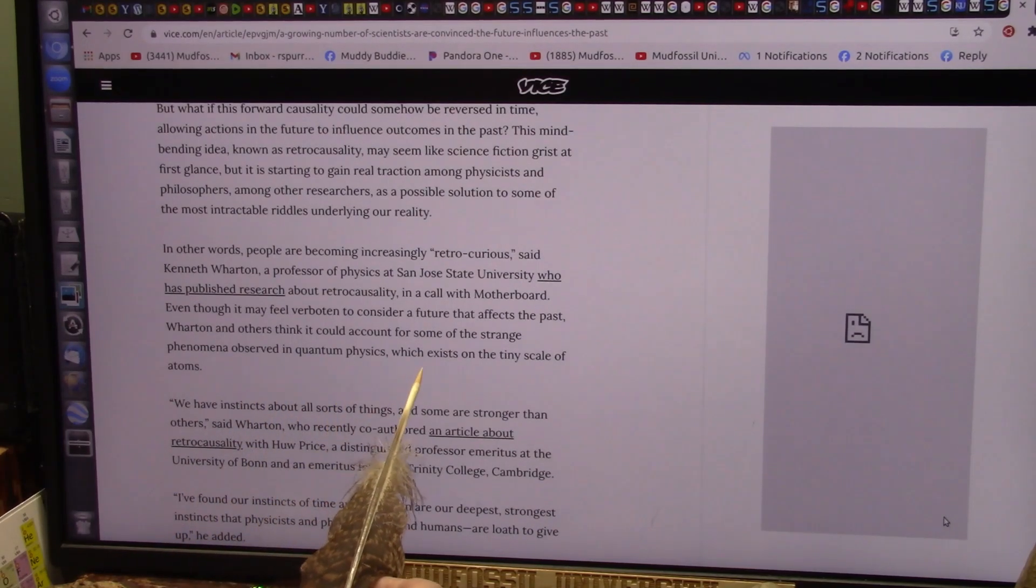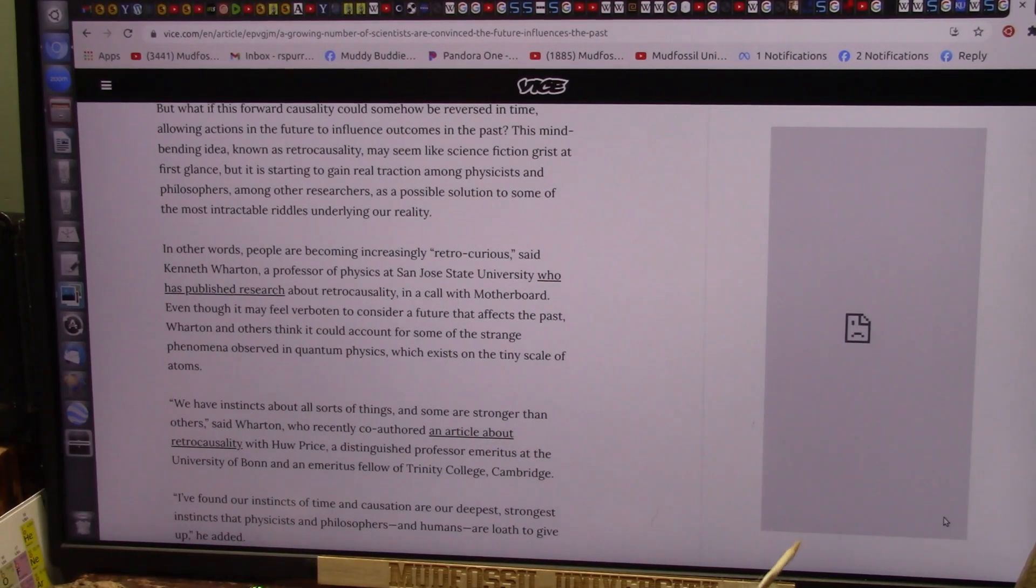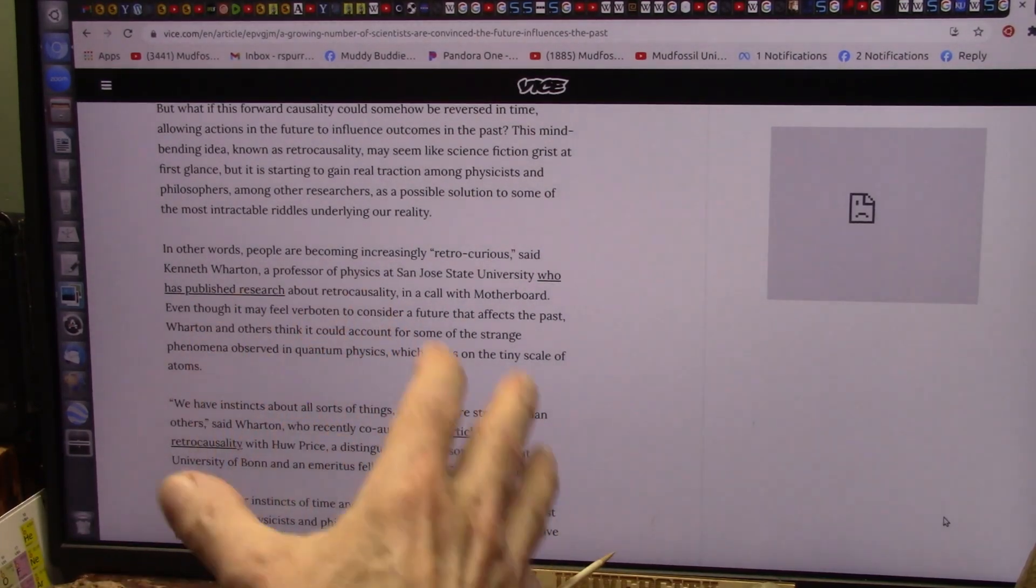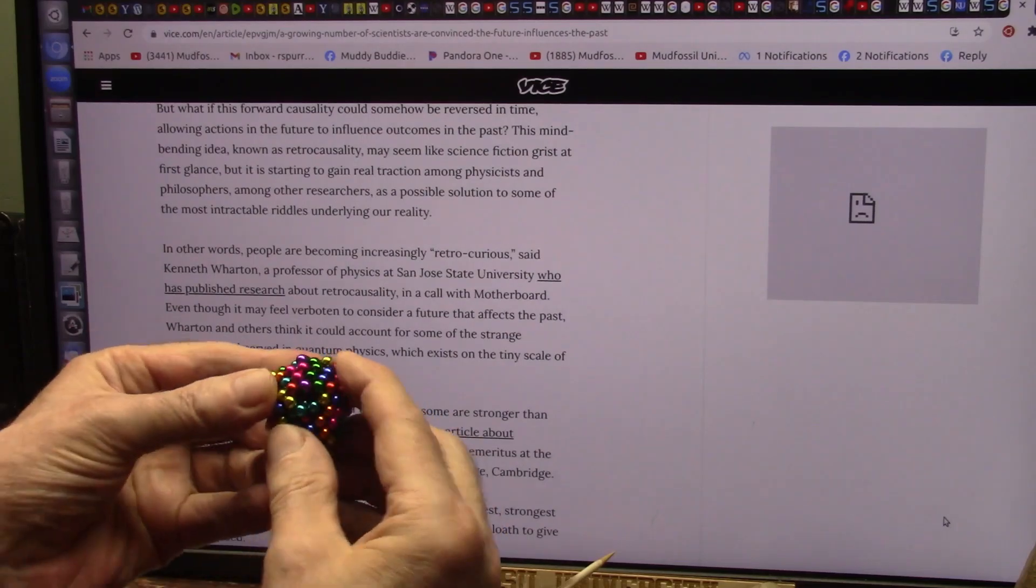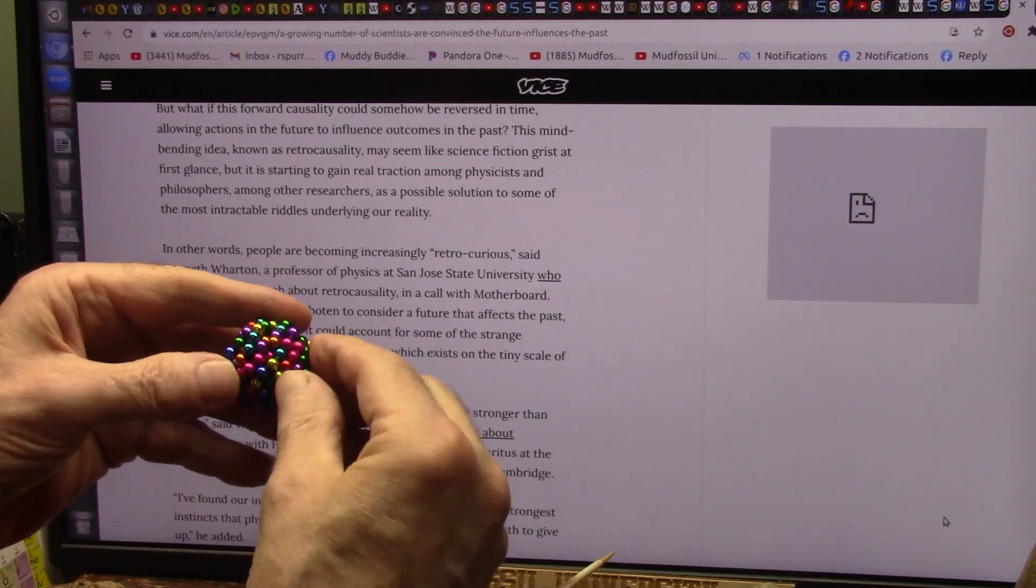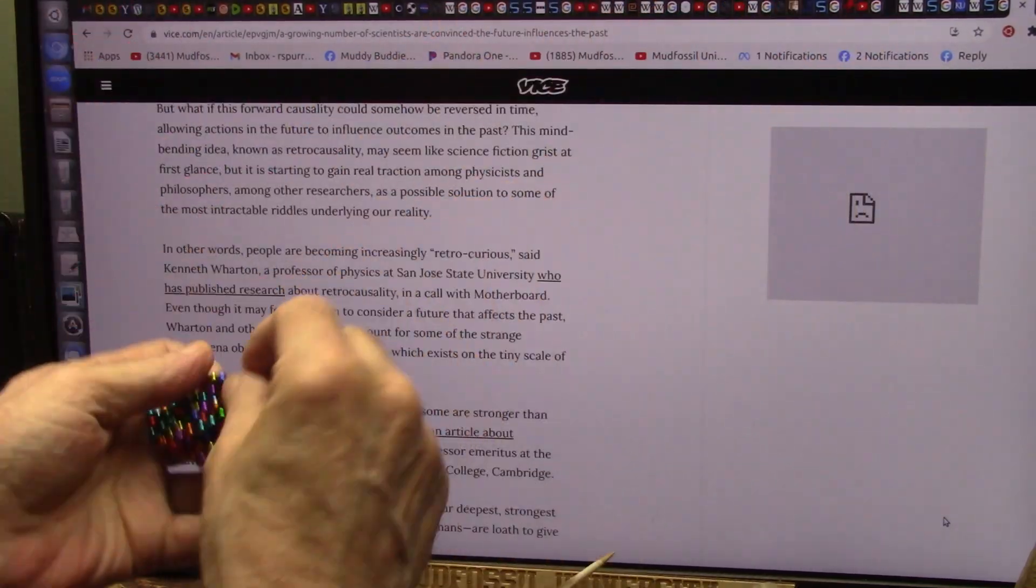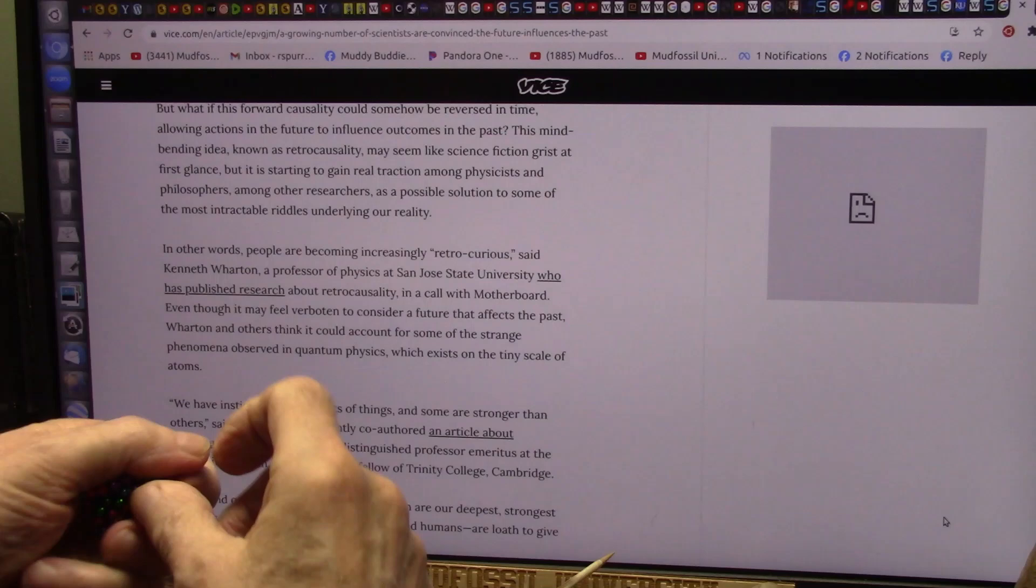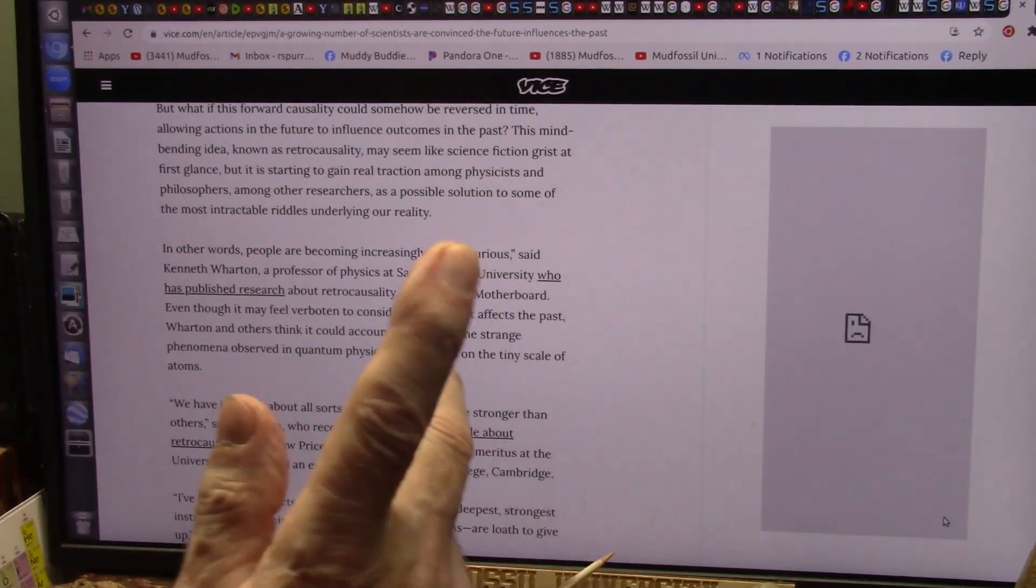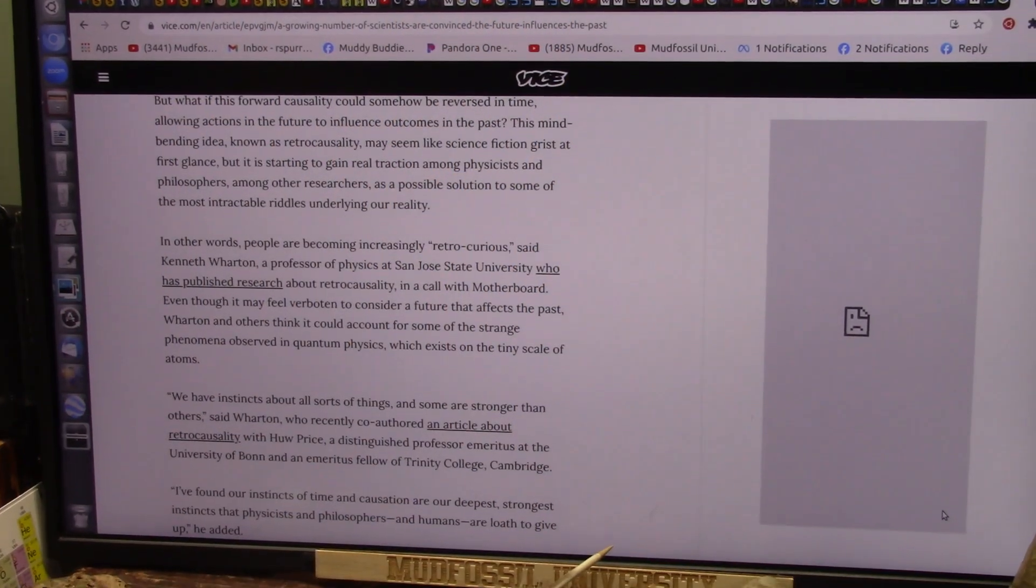Even though it may feel verboten to consider a future that affects the past, Wharton and others think it could account for some of the strange phenomena. Now listen to this - observed in quantum physics, which exists on the tiny scale of atoms. They are below atoms, they are on the subatomic model, and that is what my research has worked on - with light. Light is subatomic particles, they are not atoms, they are below the atom scale and they are particles of light which, when you add a whole batch of them together, they do add up to be protons. But they are actually these little bits and pieces of the proton.